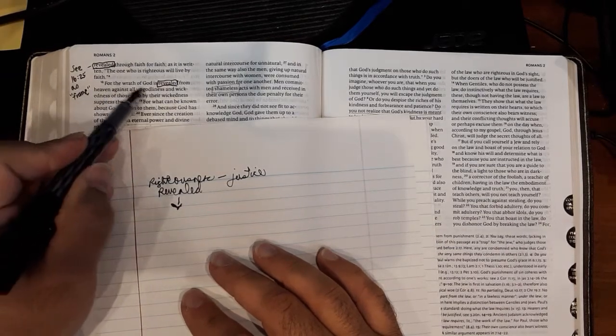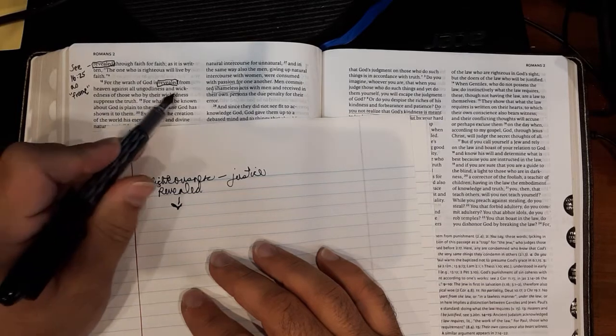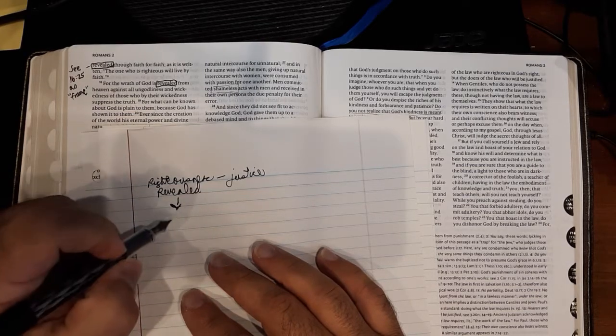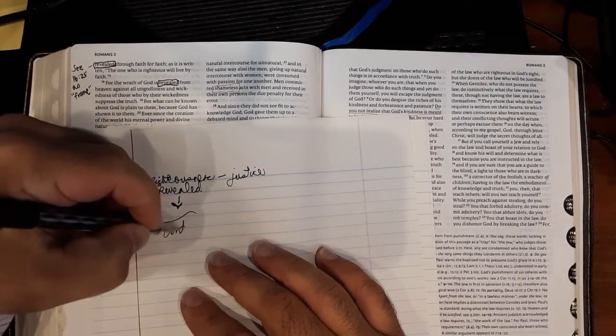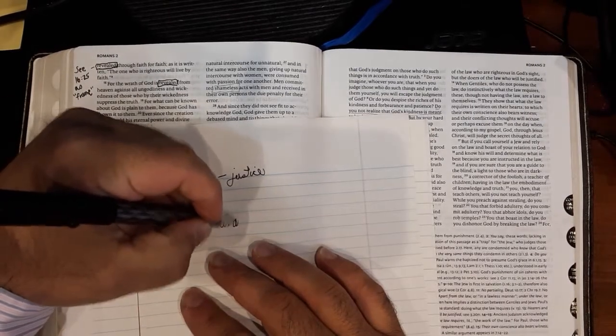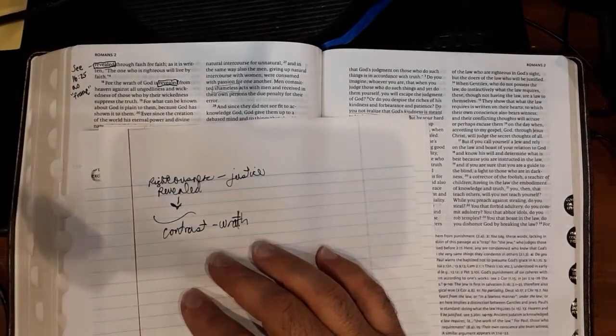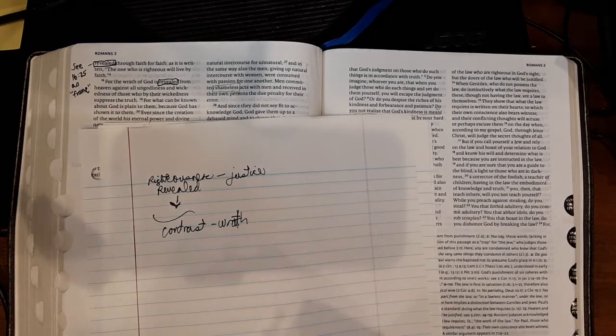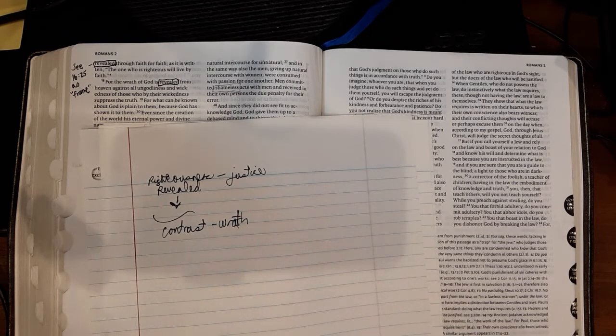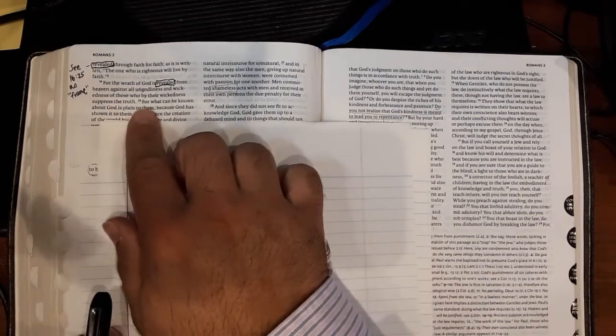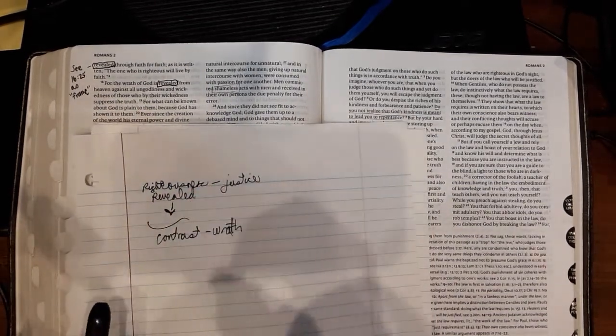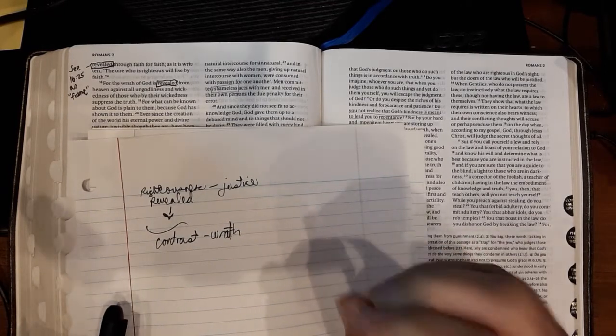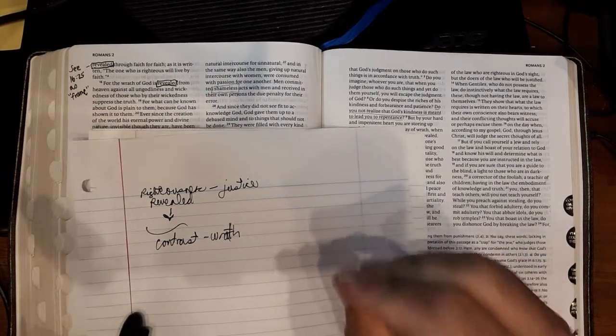And so we have in verse 18, for the wrath of God is also revealed from heaven against ungodliness and wickedness of those who by their wickedness suppress the truth. So if God's righteousness is revealed, that automatically sets about the contrast, which is God's wrath. You can't have a holy God who is concerned with right standing and justice if there is a lack of wrath or judgment.